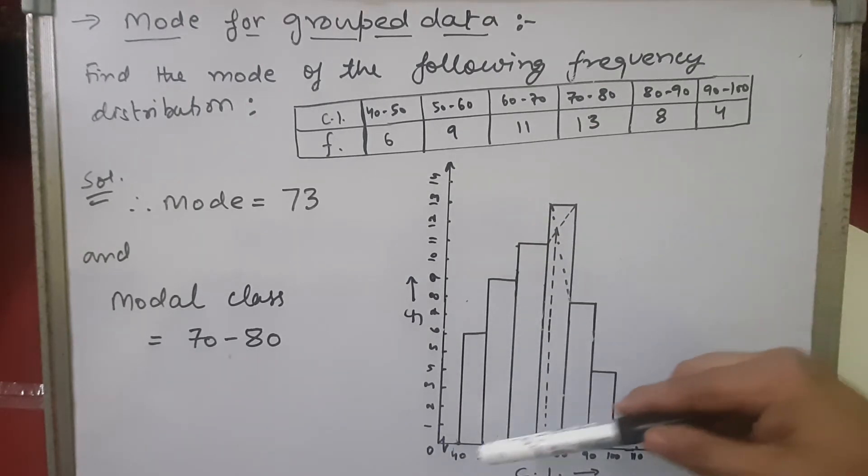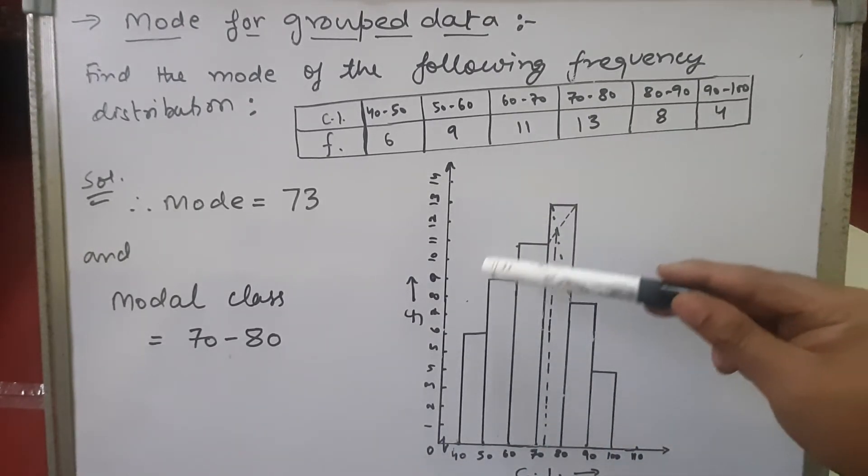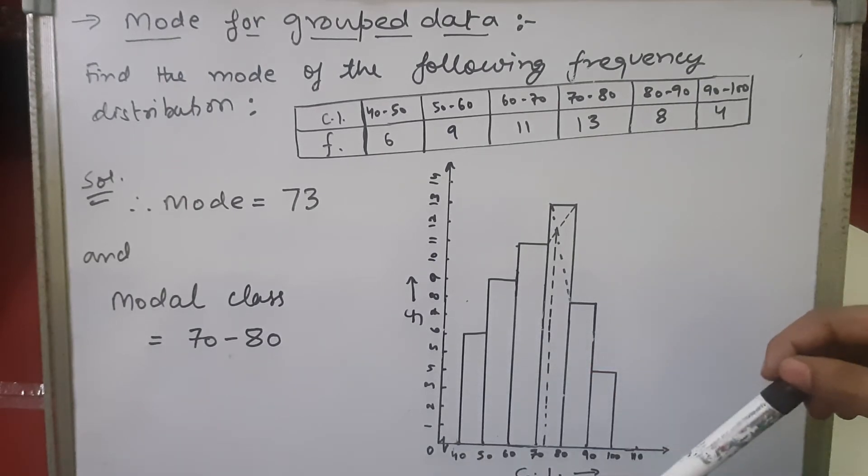So frequency I've just taken 1, 2, 3, 4 at one centimeter. You can take your scale, but if it is given in the sum that you should follow this particular scale, say two units equals to one centimeter, then we have to follow the scale given in the sum.